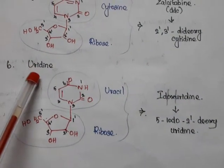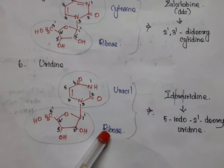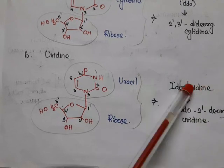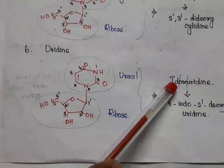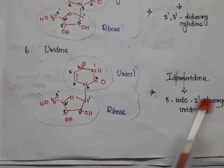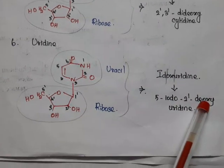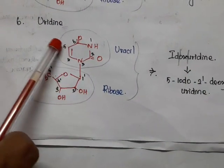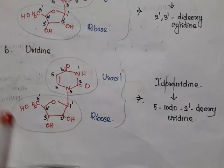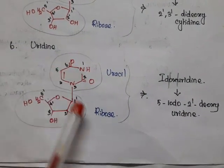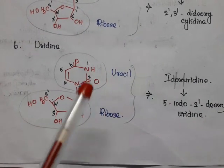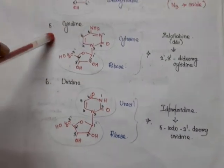Uridine is the fusion of uracil with ribose. Now, idoxuridine can be divided into three parts: ID for iodine, ox for deoxy, and uridine. In the structure of uridine, iodine is substituted at the fifth position and oxygen is removed at the second position (2'-deoxy). So idoxuridine has iodine at the fifth position and no oxygen at the 2' position of ribose. That is all about the relationship between nucleosides and antiviral agents.